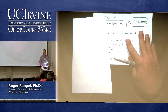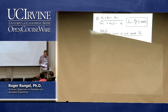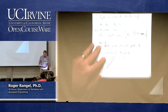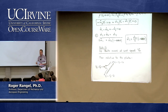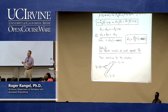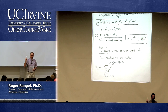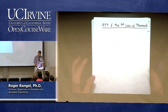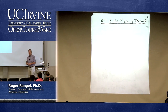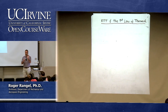Moving to the last part of this chapter — applying the Reynolds transport theorem to the first law of thermodynamics. We need to pick the property B. For the first law, B is the total energy, which makes lowercase b the specific total energy — total energy per unit mass.